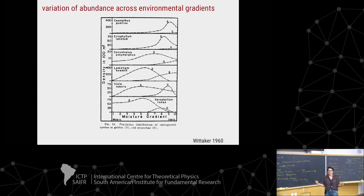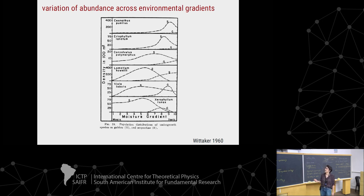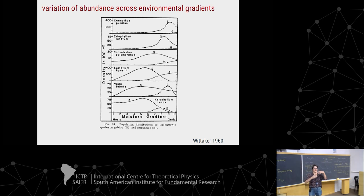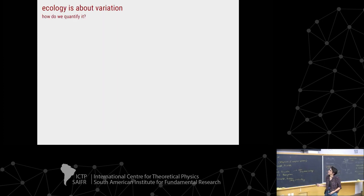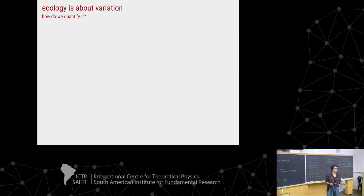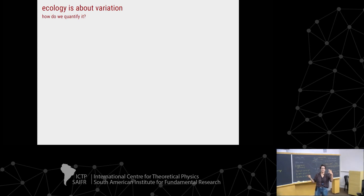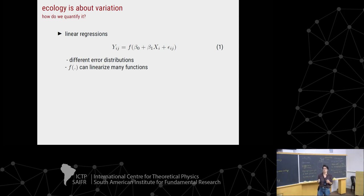Another way that we study species abundance distributions is their variation across environmental gradients. This is a classical work from Whittaker. Each curve shows the abundance of a particular species across the environmental gradient on the x-axis. We can see that some species respond to the environmental gradient differently. If we are thinking about selection building communities, we can think that dealing with environmental gradients is really useful. So ecology is about variation — the main issue is how do we quantify it. We are not approaching this using math; we are quantifying and describing variation using statistical models.